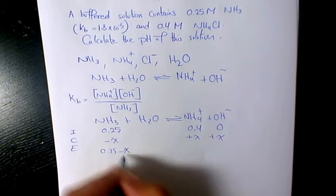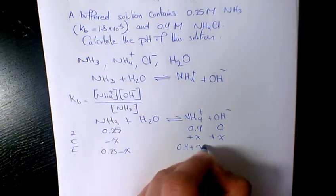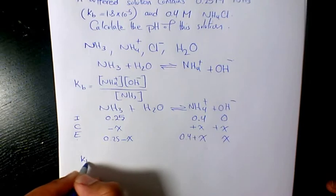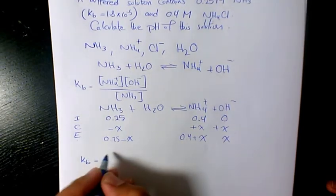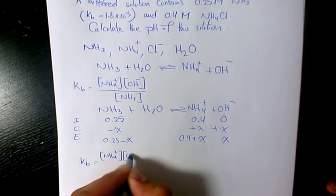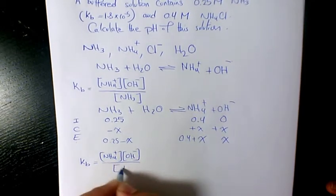So it's going to be 0.25 minus X, 0.4 plus X, plus X. So Kb will be NH4+ times OH over ammonia, which will be 0.4 plus X times X divided by 0.25 minus X.